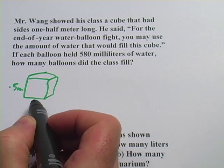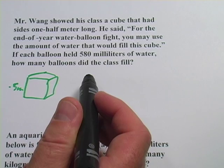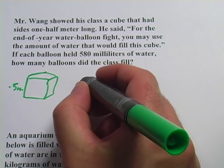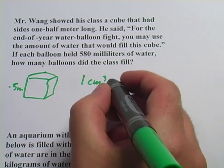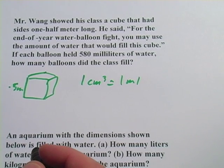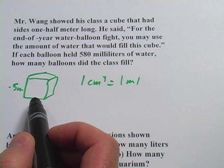What we want to do is figure out the volume of this thing in milliliters. Well, how do we do that? We're going from meters, how do we get to milliliters? One of the nice things about the metric system is that one cubic centimeter is the same in volume as one milliliter.